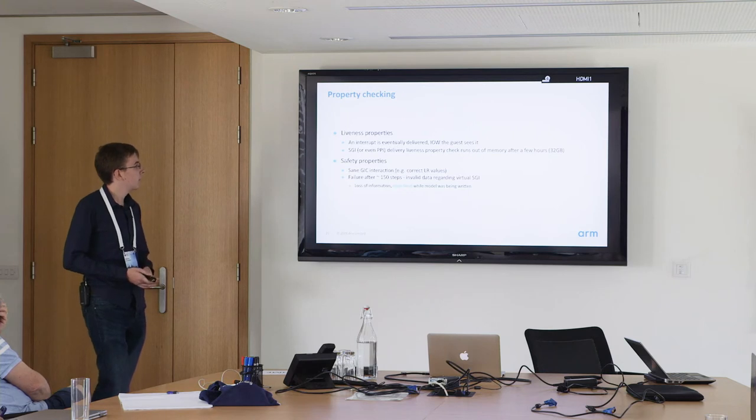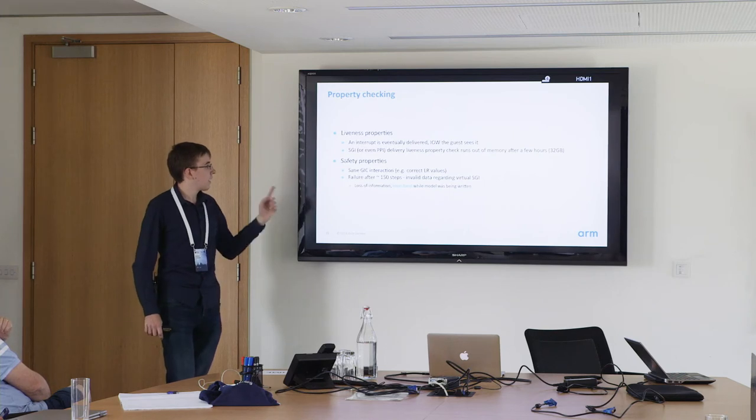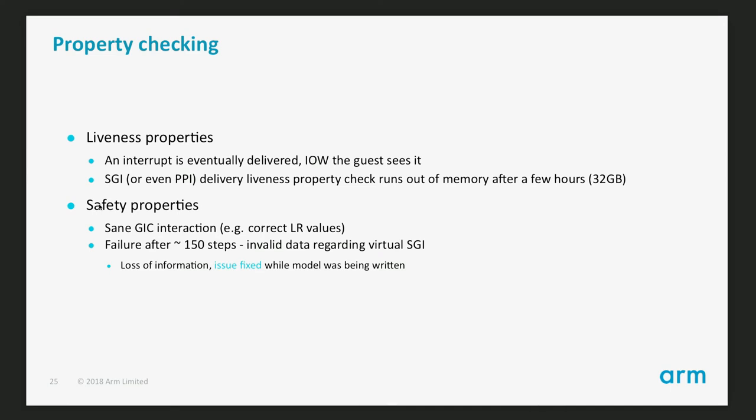Now for results. For liveness properties, what I'm interested in is correct interrupt delivery — at some point delivering an interrupt to a guest, whether from a forwarded physical interrupt or a QEMU request, meaning the guest is actually currently handling the interrupt. I'm running out of memory trying to verify this, so it's not conclusive. For safety properties — always having correct values in the list registers and correct internal hypervisor variables — I have a failure after 150 steps. It's about some loss of information related to software generated interrupts, and it's actually a real bug — found while I was still working on the model and already fixed, but a good milestone that the model reproduces a real bug.